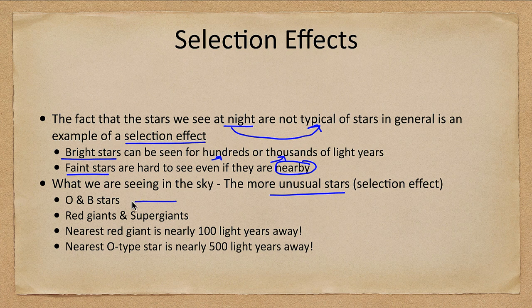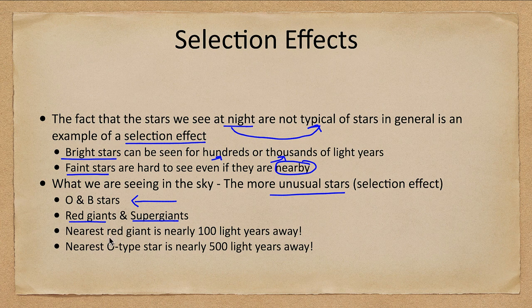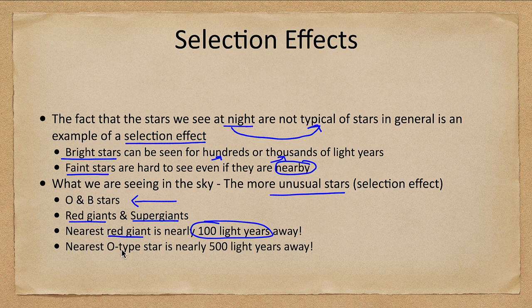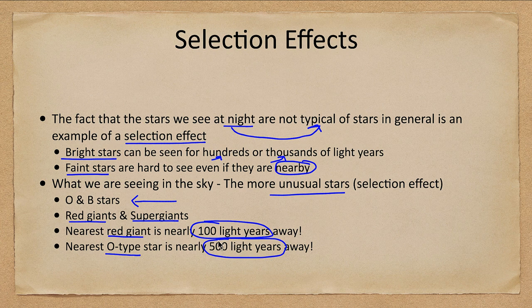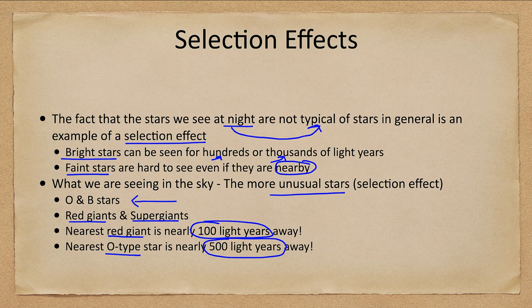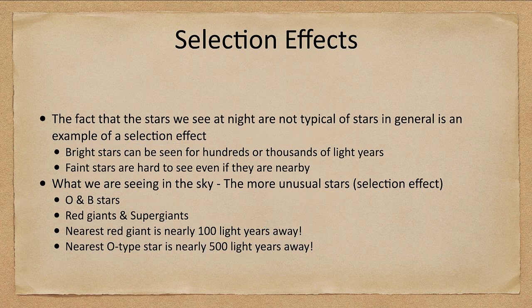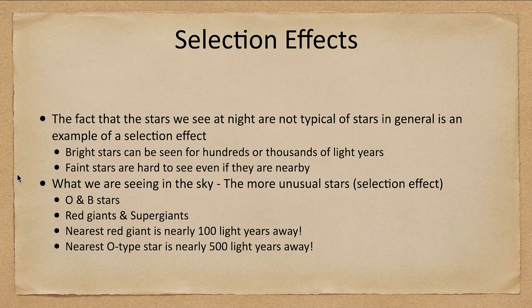We see O and B stars. Remember there were none of those close to us. Red giants and supergiants which are also far away. Our nearest red giant is more than 100 light years away. The nearest O type star is 500 light years away or so. We're looking at very large distances, however we can see these brightly even over those distances because they are so tremendously bright. So the stars you see when you go out at night are not the typical types of stars that exist.